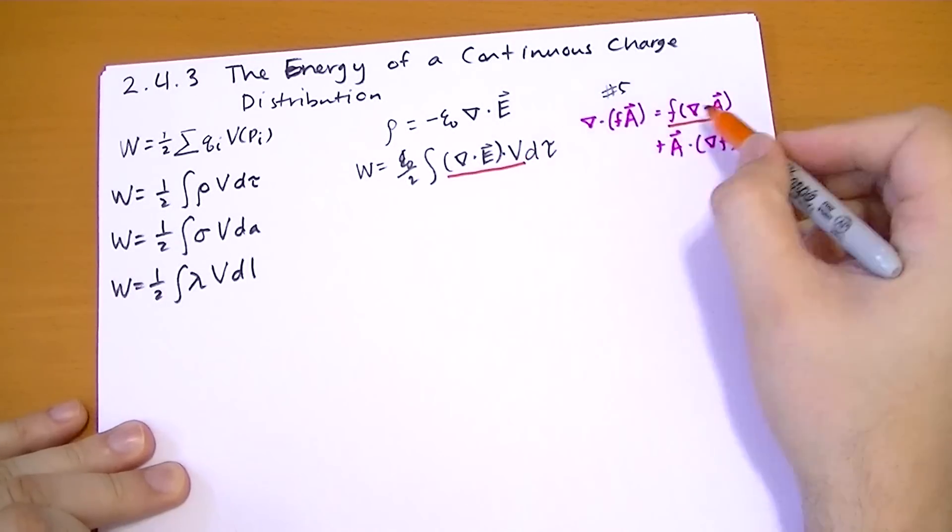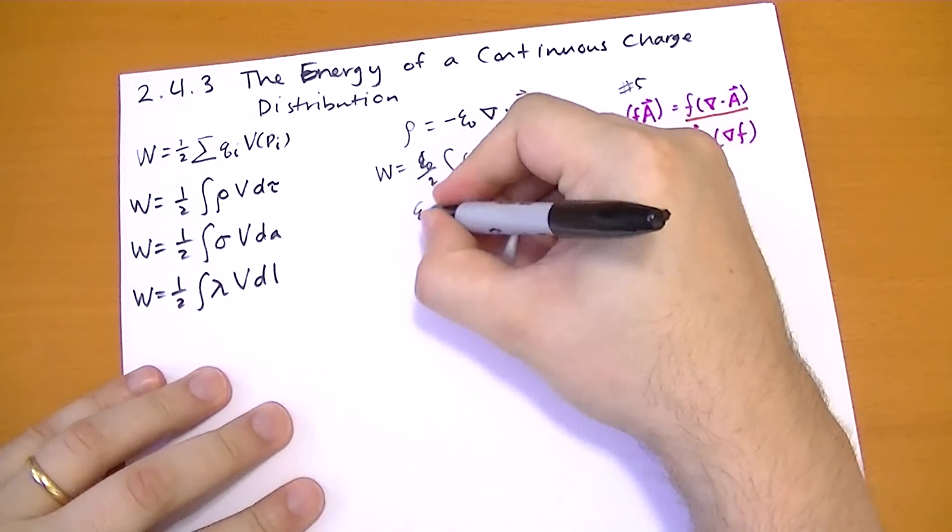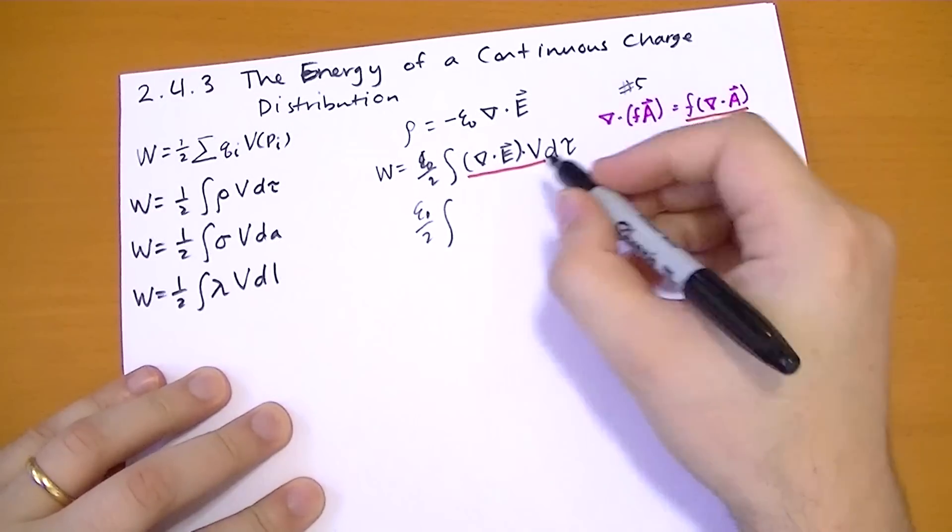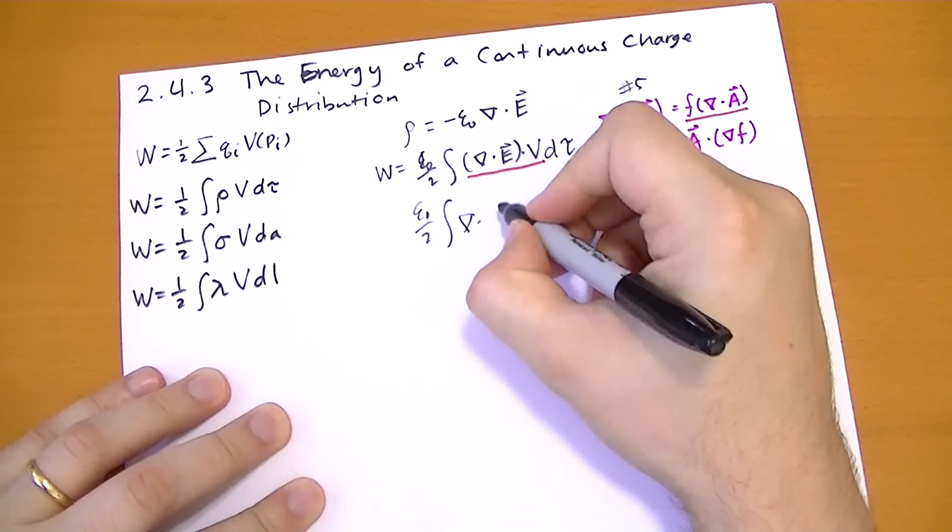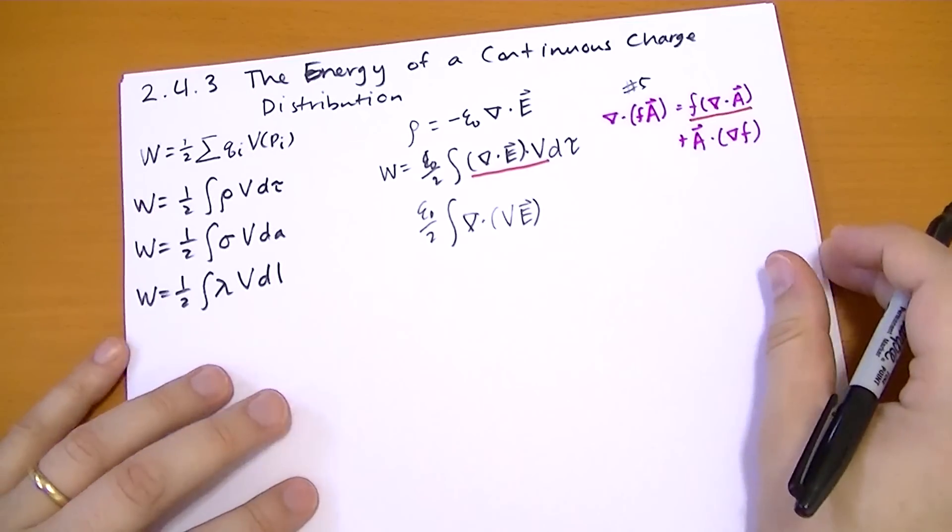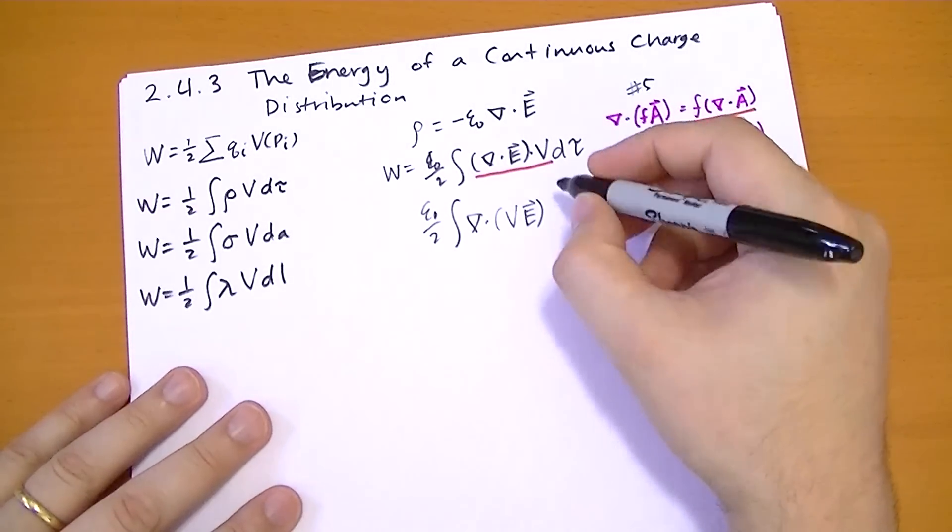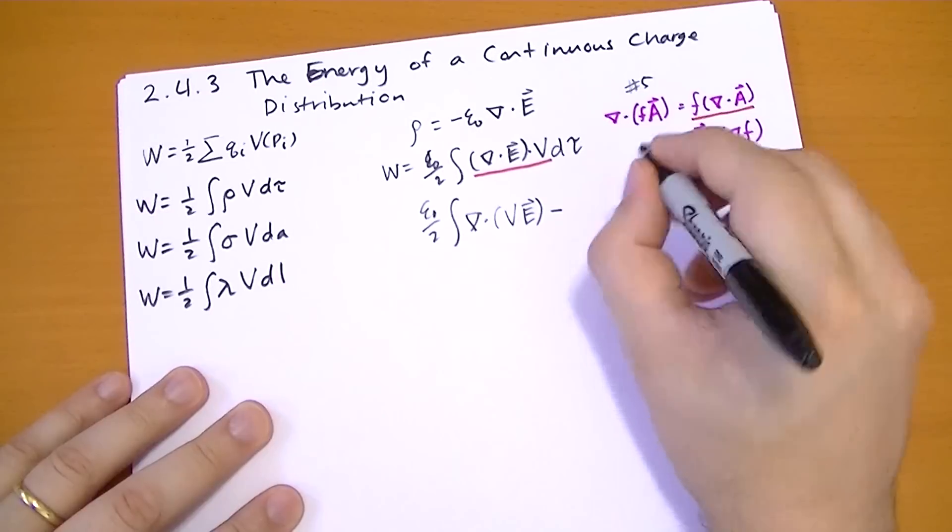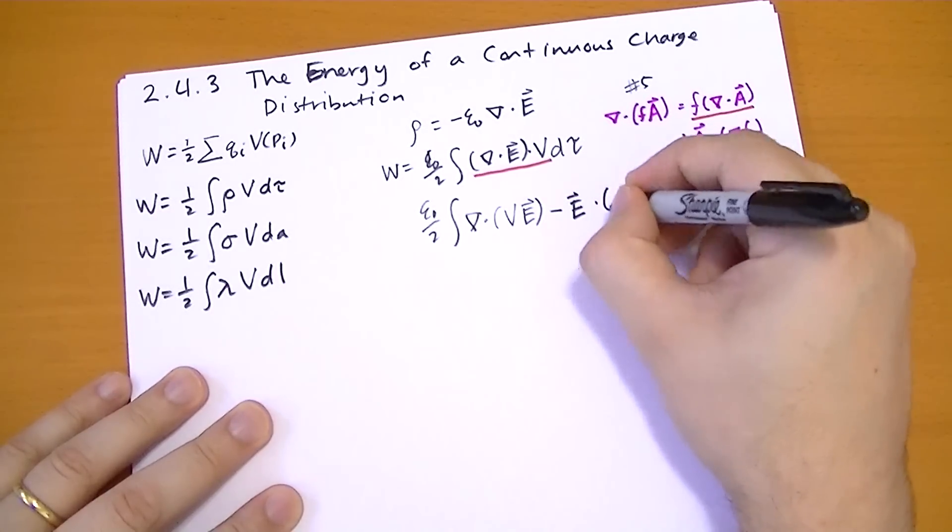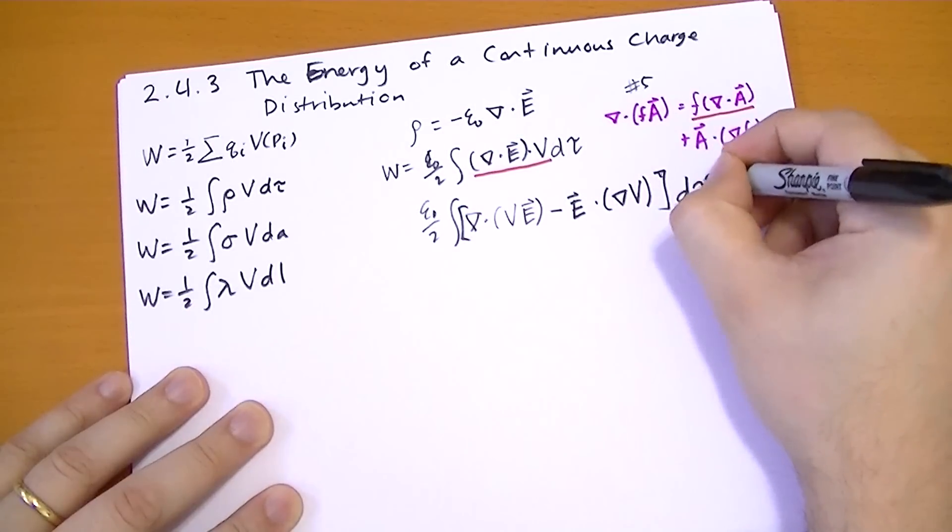So this term right here is the same as this right here, where v is the f and E is the vector field. So let's rewrite that this way. So we have epsilon naught over 2, the divergence of vE, and then we subtract out the vector field dot the gradient of the potential. And all of that is d tau.